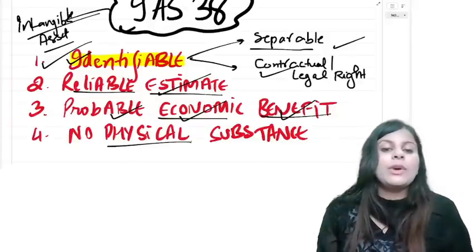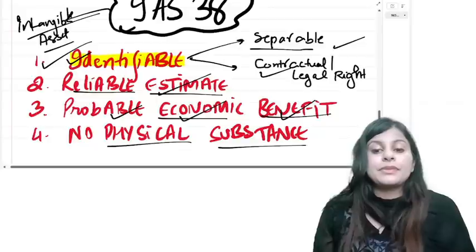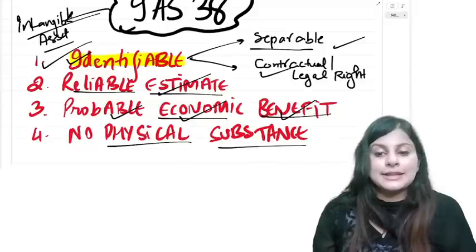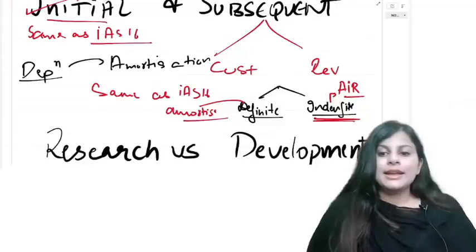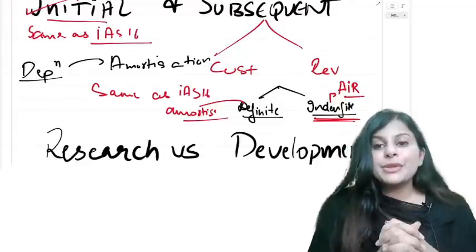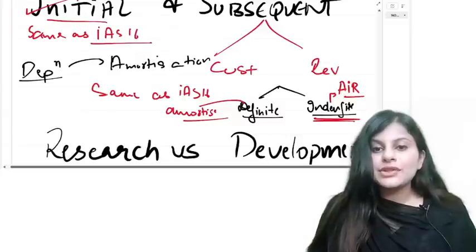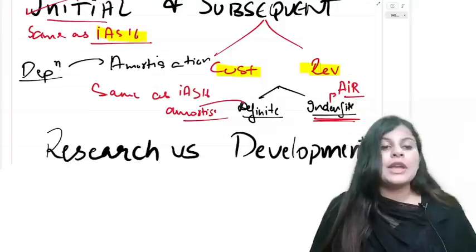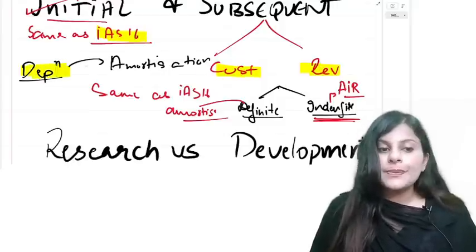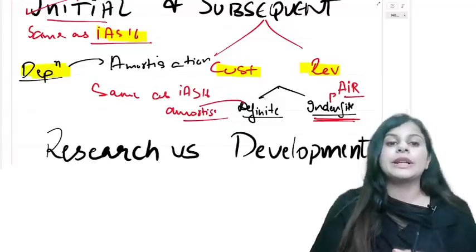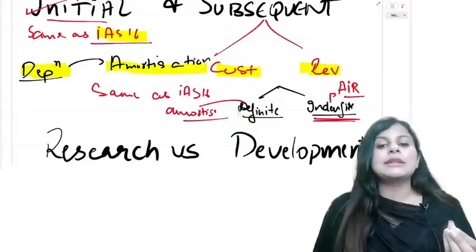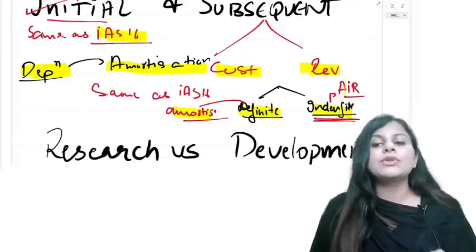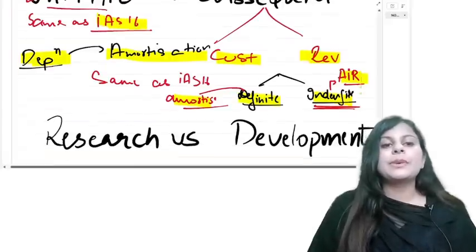Intangible assets have no physical substance — you cannot touch, see, or transfer them. The subsequent treatment of intangible assets is the same as IAS 16 under cost and revaluation models, except the word 'depreciation' is replaced by 'amortization.' If the useful life is definite, we amortize it. If the life is indefinite, we conduct an annual impairment review instead.